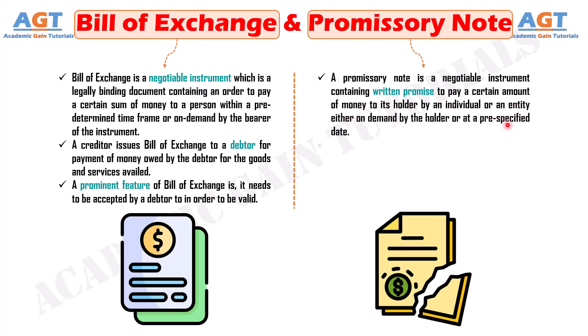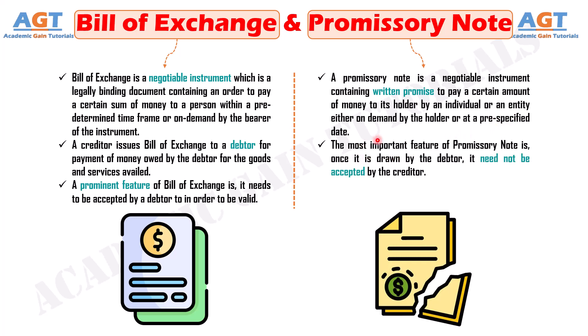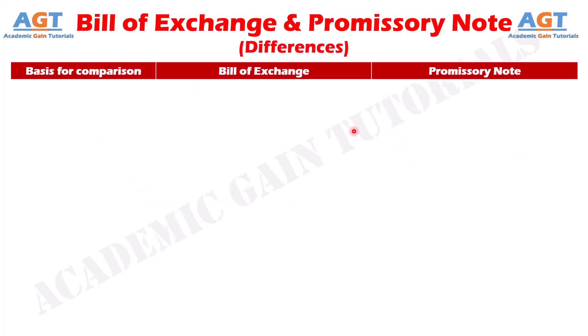The most important feature of a Promissory Note is that once it is drawn by the debtor, it need not be accepted by the creditor. So, let's look into the basic differences between Bill of Exchange and Promissory Note in a tabular form.